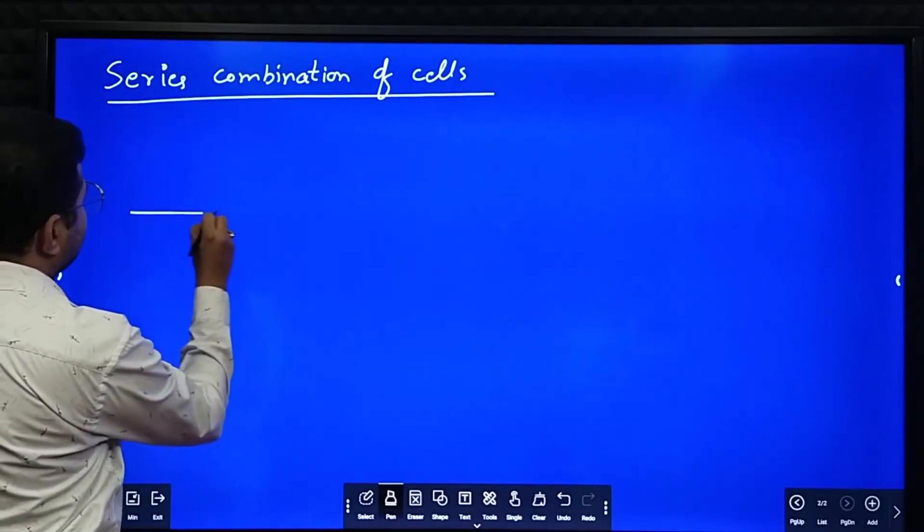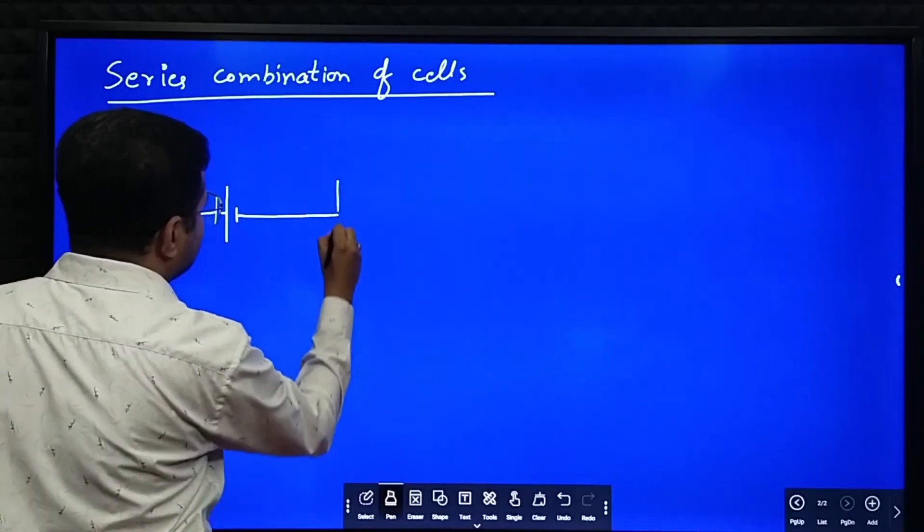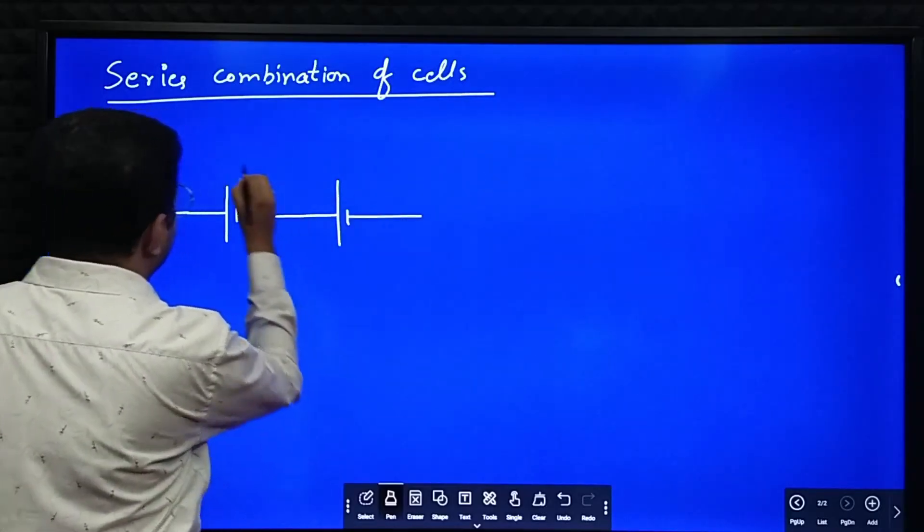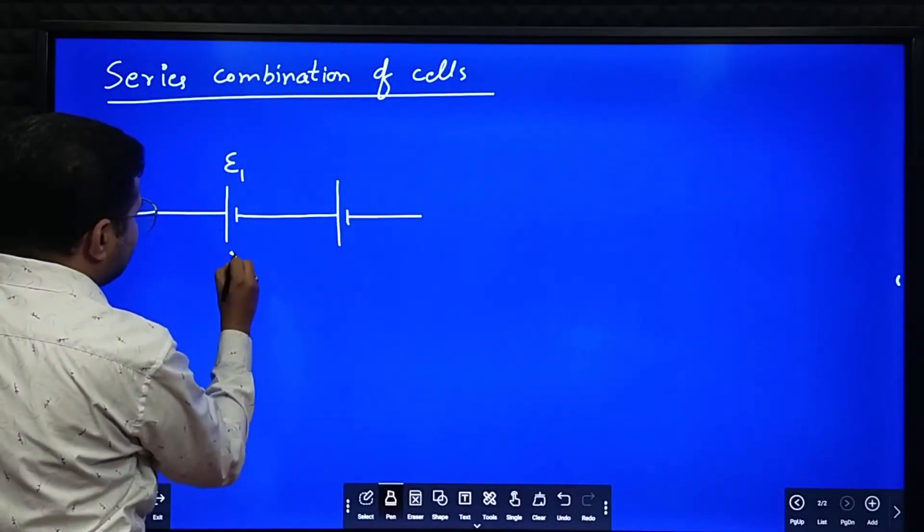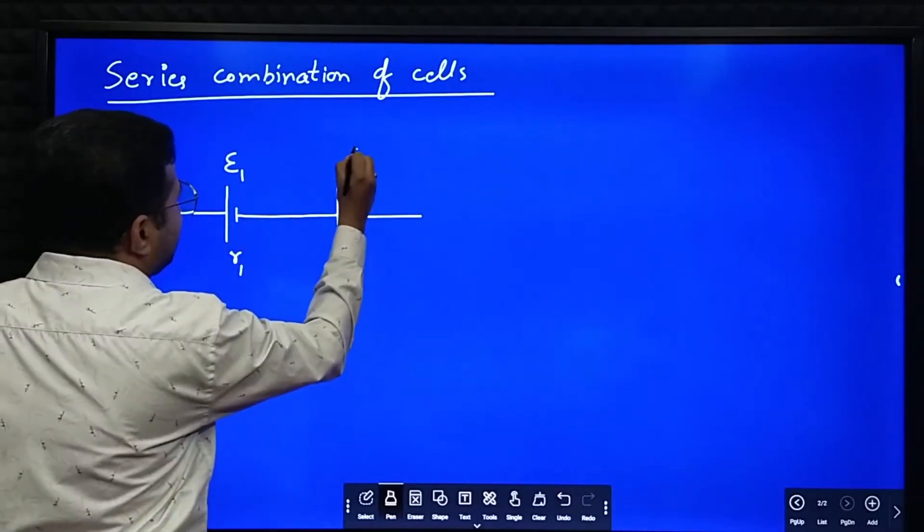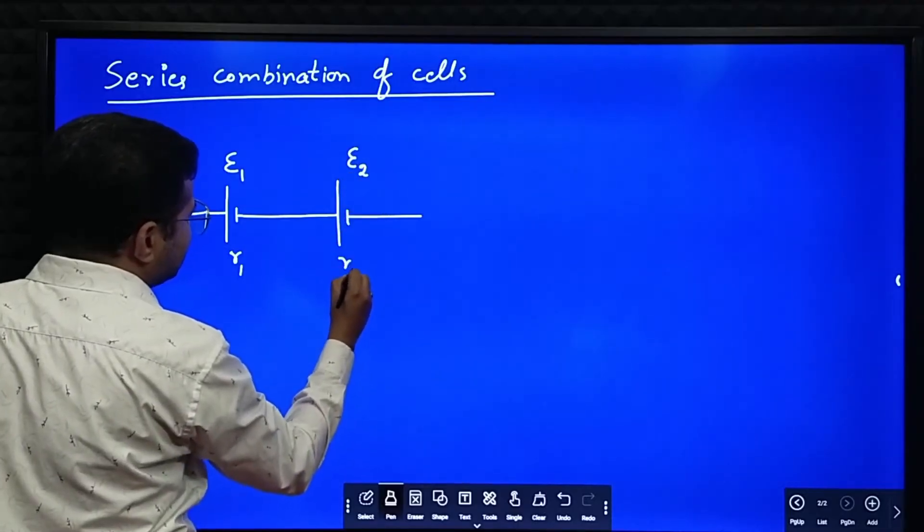Let me consider two cells connected in series. The first cell, I'll name it as EMF of the first cell, let it be E1 and its internal resistance is R1. EMF of the second cell is E2 and its internal resistance is R2.